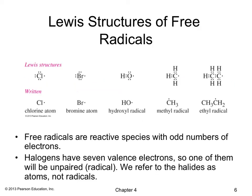In terms of Lewis structures of free radicals: chlorine was shown on the previous slide; here are bromine, hydroxide, methyl radical, and ethyl radical. All of them have all of their electrons but have one single unpaired electron — the radical. The radical location is on the O for hydroxyl, on the C for methyl, and on the CH2 for ethyl. Free radicals are reactive species with odd numbers of electrons. Halogens have seven valence electrons, so one will be unpaired. We refer to halides as atoms, not radicals.